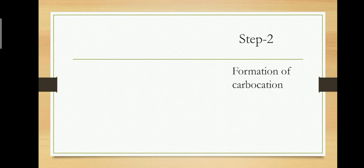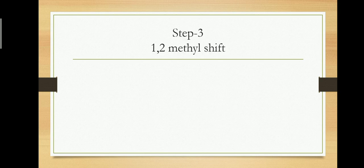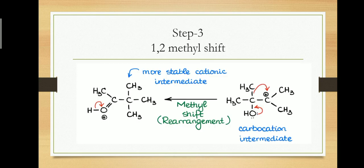Step 2 is the formation of a carbocation. The adduct that forms dissociates — it leaves as water — leaving a positive charge on the carbon, which results in a carbocation intermediate.